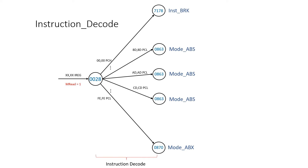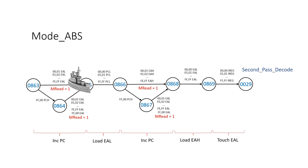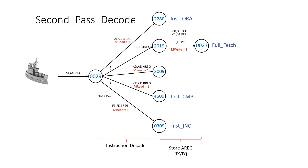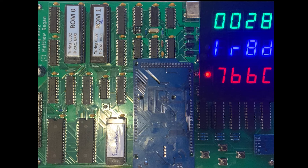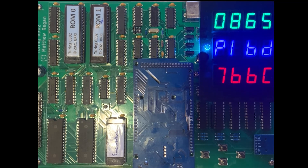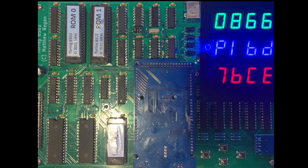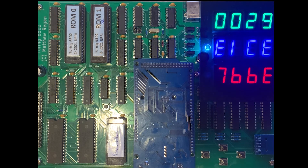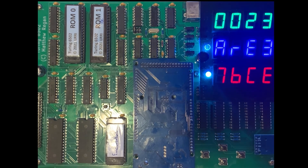For a store A absolute instruction, the states we move through are: 28, 863, 865, 866, 868, 869, 29, 2019, and back to 23 which is the start of full fetch. Watching the rule machine run: fetch and decode 8D at rule 28, jump to mode absolute, increment PC, load EAL, increment PC, load EAH, touch EAL again, go to second pass at rule 29, jump to instruction store and write the final value, then go to full fetch for the next instruction.